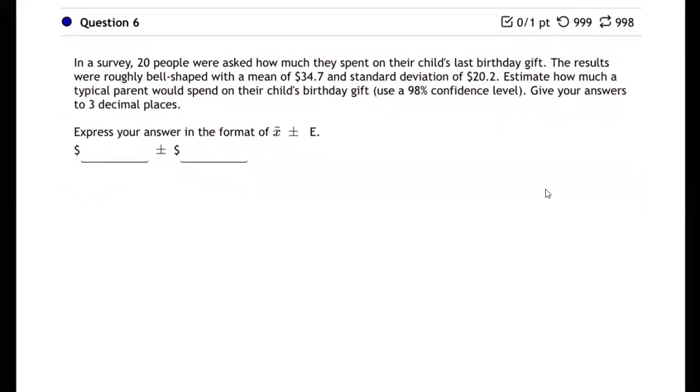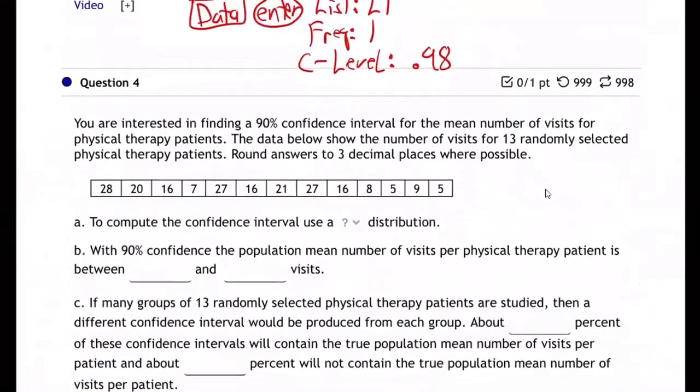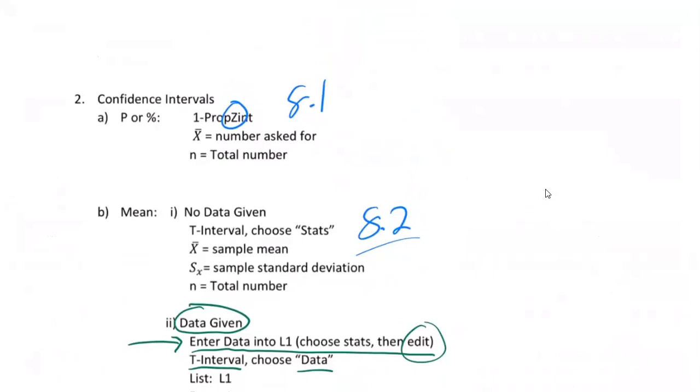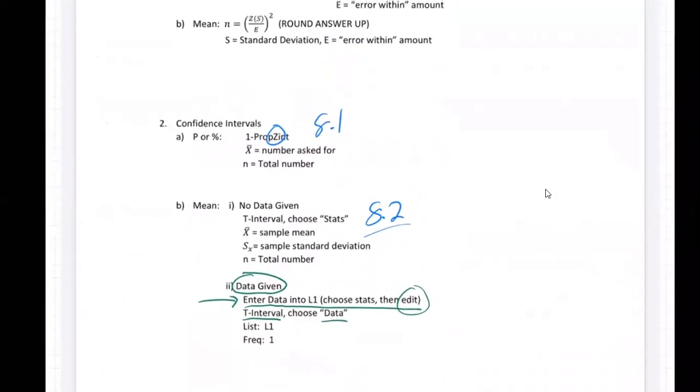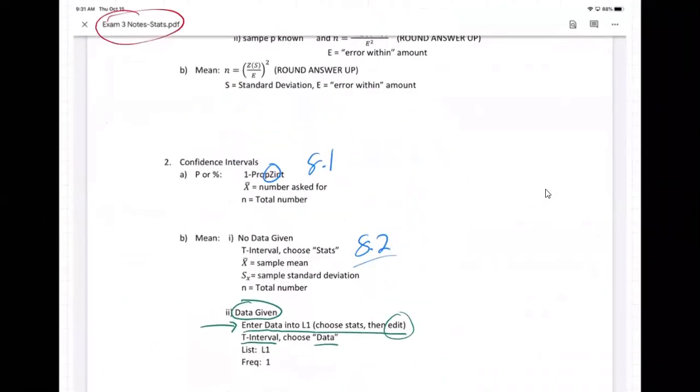So how are we going to do this question? They want us to form a 98% confidence level. And we see that they're talking about a mean, right? That's a mean right there. So we're going to go to the mean. Let's go to the exam three notes. So here's the exam three notes. And we're looking, we're going to be in this. Here's mean. And it's this one, right? It's no data given. No data is given on this problem. So we're going to choose T interval and stats and put in our X bar, S sub X and N.